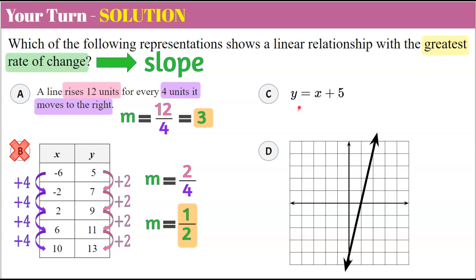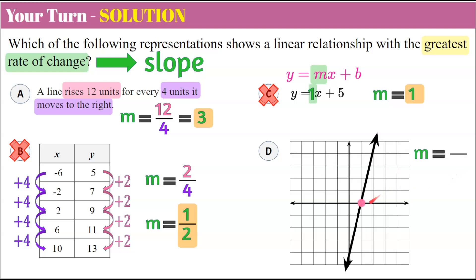Moving on to C — this is written in slope-intercept form, where M represents our rate of change or slope. M is the coefficient of the variable x. The coefficient in this function is an invisible 1. So the slope here is 1, and 1 is less than 3, so we can eliminate answer choice C. Looking at D, we have a graph. To find slope, I'll identify two points on the line and find my ratio of rise over run. We rise 4 and run 1, giving a ratio of 4 to 1. So slope is 4. Since 4 is greater than 3, we can eliminate answer choice A, giving us answer D as the linear relationship with the greatest rate of change.